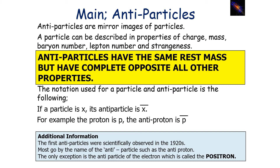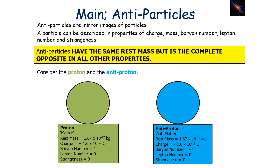The first antiparticles were actually observed in the 1920s. Most antiparticles go by the name with the prefix 'anti' in front, like the antiproton and the antineutron. The only exception is the antiparticle of the electron, which we call the positron. To clarify, all antiparticles have the same rest mass and rest energy, but completely opposite all other properties compared to their particle counterpart.